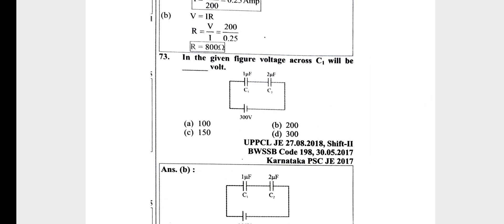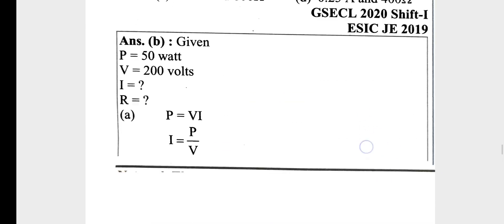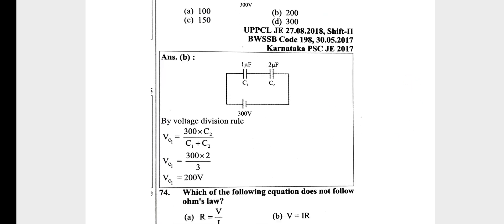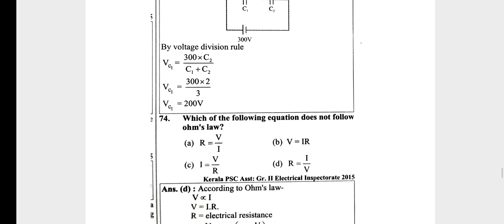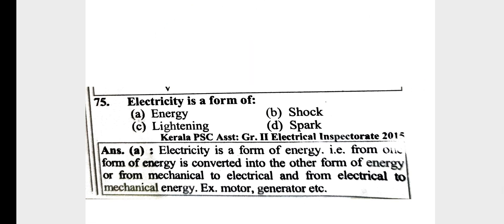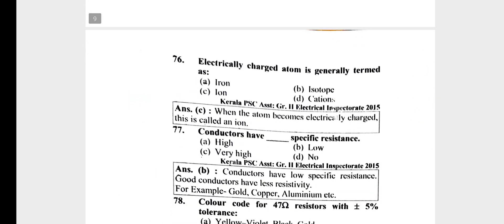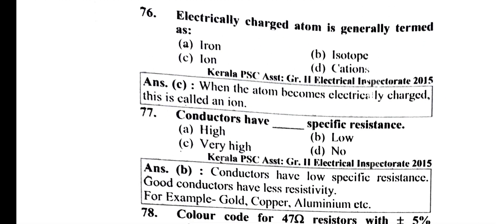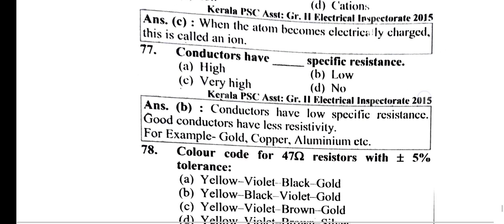From the given figure, using the voltage division rule: Vc1 equals 300, and total voltage — C2 divided by 7 plus C2 — gives Vc1 equals 200. The value is 74. The following equation does not obey Ohm's law. Electricity is a form of energy. An electrically charged atom is generally termed an ion. Conductors have low specific resistance — option B.